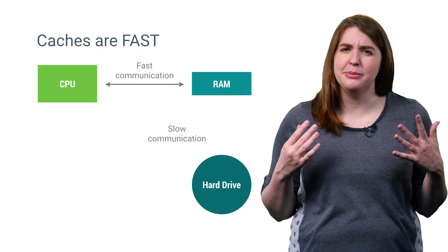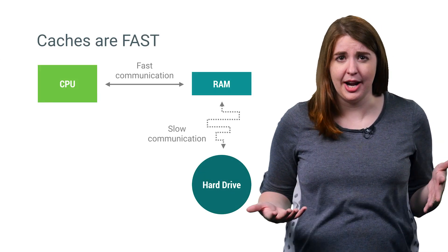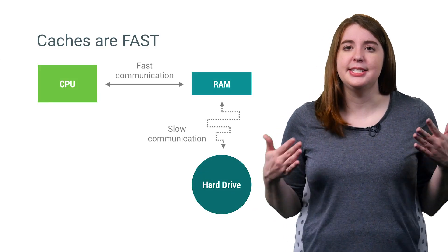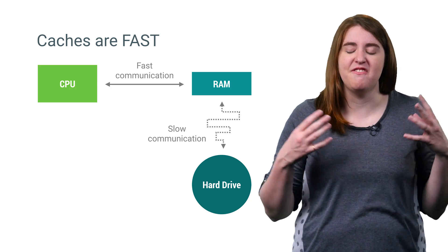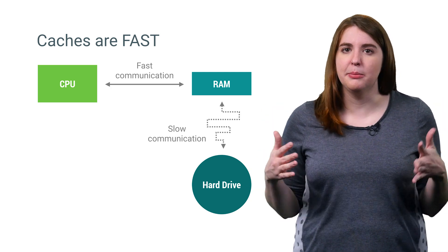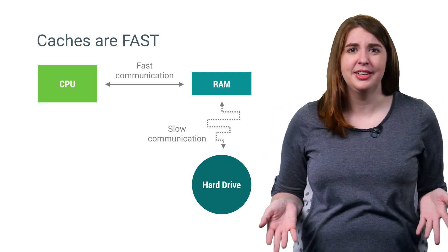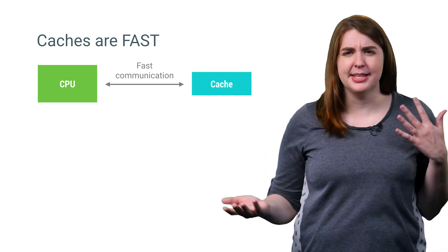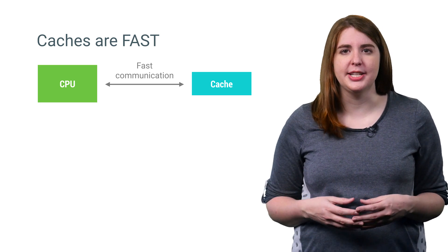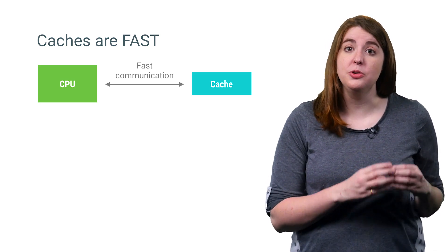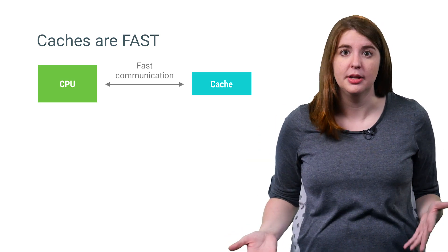If you think about it, there's a pretty clear reason why computers have RAM. It acts as a data cache to access recent information fast — like super fast — compared to having to get it from the hard drive. And this is basically what a cache is: a place to store data that's frequently used so that future uses happen as fast as possible.